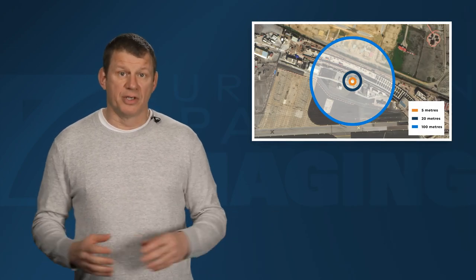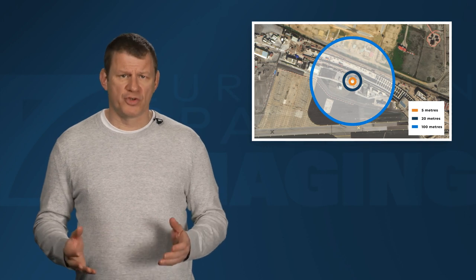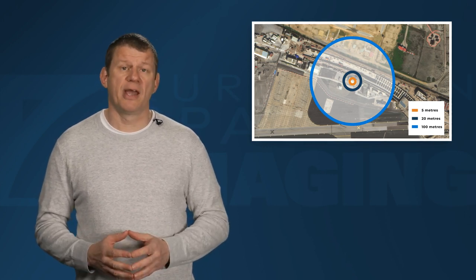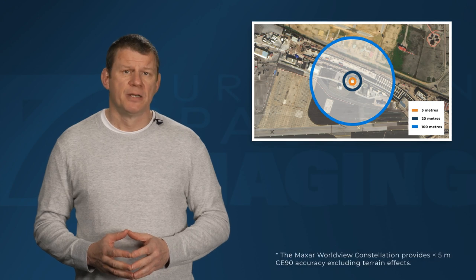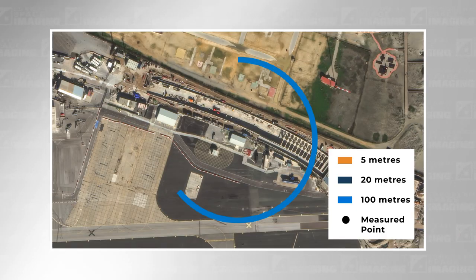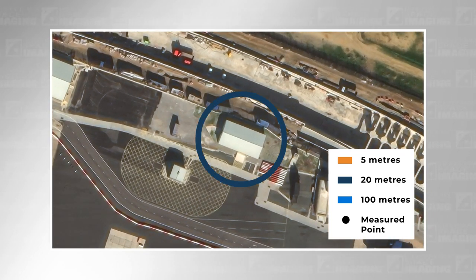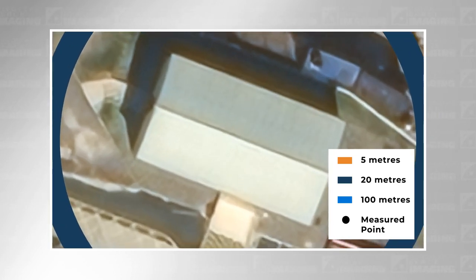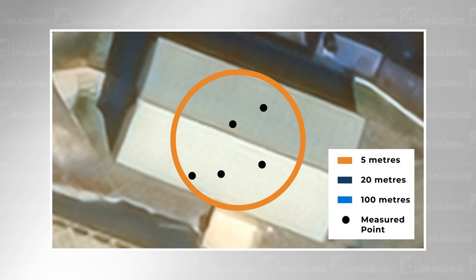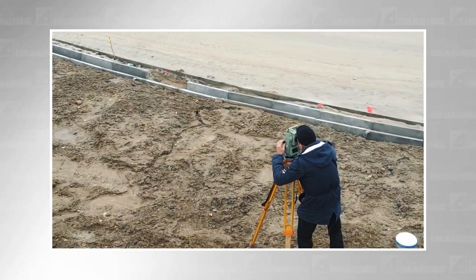When we talk about accuracy, what we are really talking about is confidence. The WorldView satellite constellation provides an absolute geolocation accuracy of 5 meters using the CE90 standard. That translates as: you can be 90% confident that the object in question is within a 5 meter radius of its actual location on the ground. This can be further increased to under 10 centimeters with what are known as ground control points — points on the ground whose coordinates are already known.